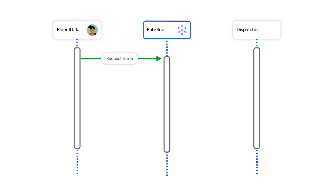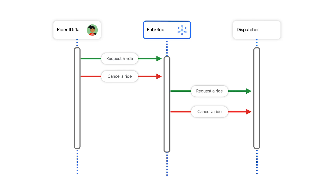But PubSub message ordering could help. Requests matter per rider. When these requests are published to PubSub, if you attach the rider's ID as an ordering key, then these messages will be delivered in the same order they are received by PubSub. The request ride message will arrive in the dispatcher service first, followed by the cancel ride message. And this would make sure that the dispatcher is always using the latest correct information about each ride, right?